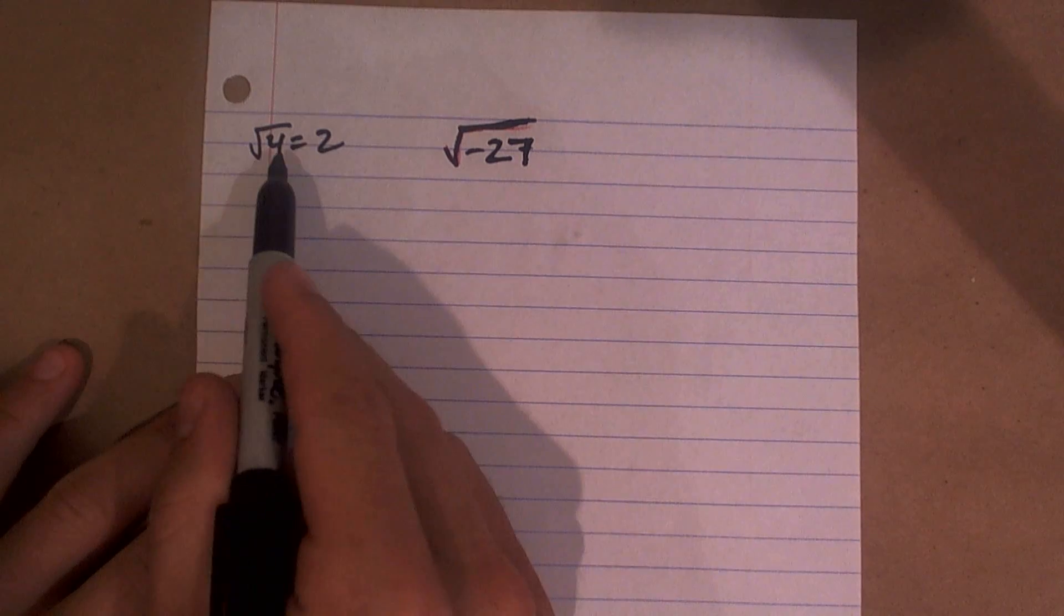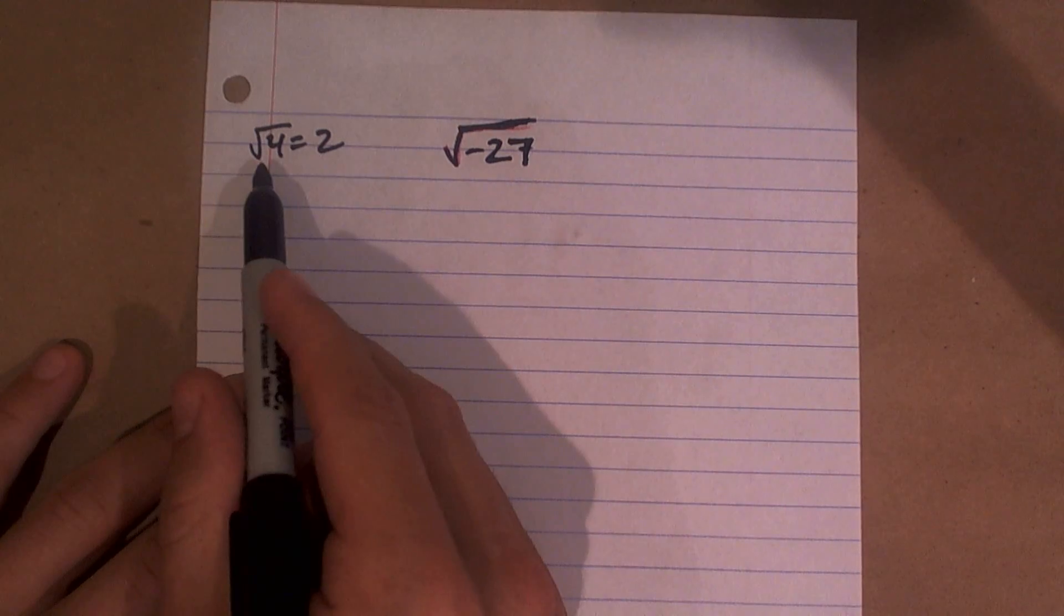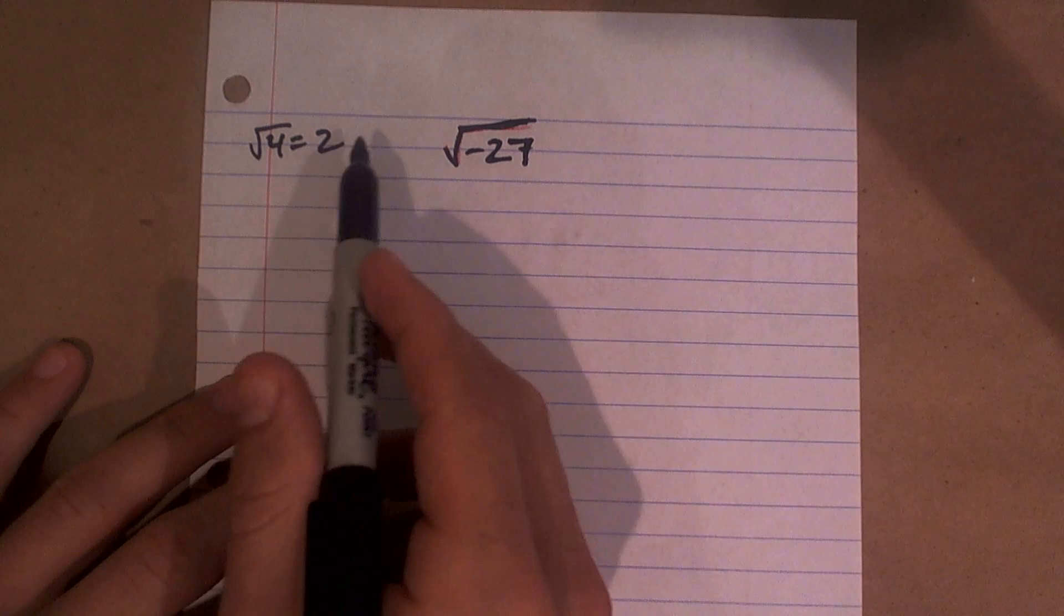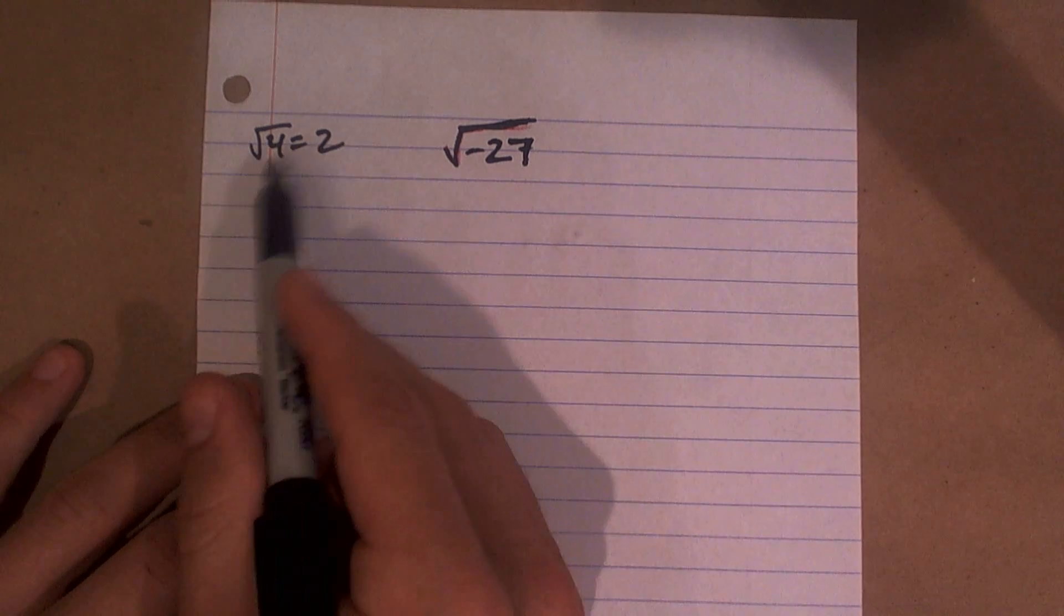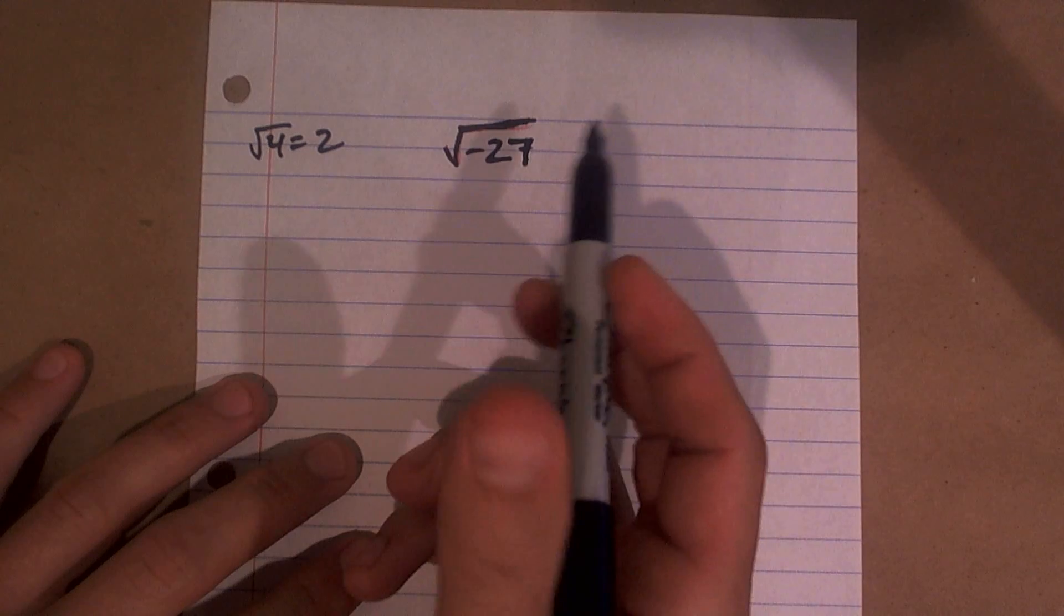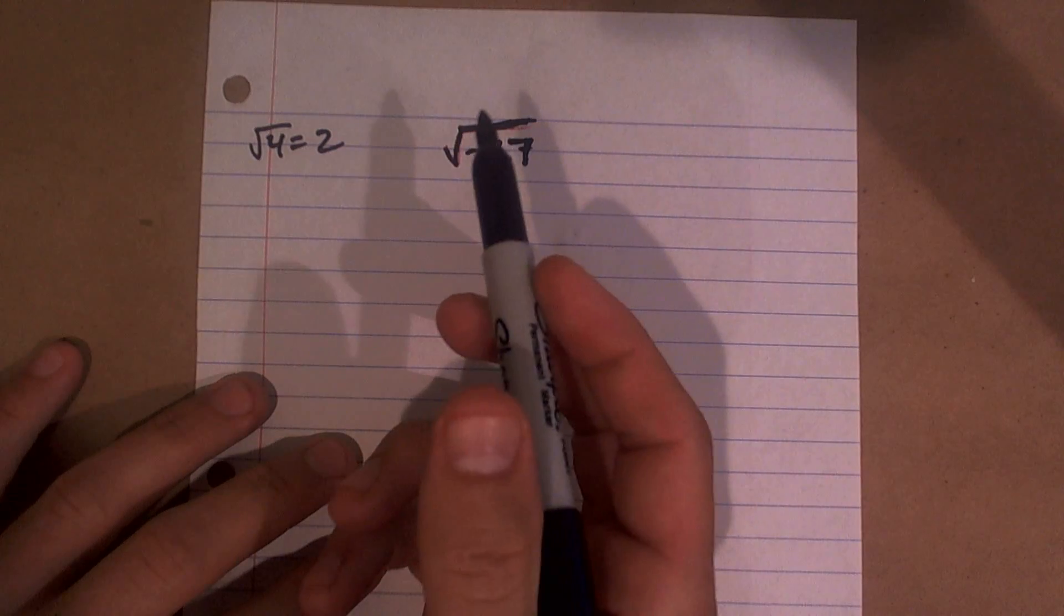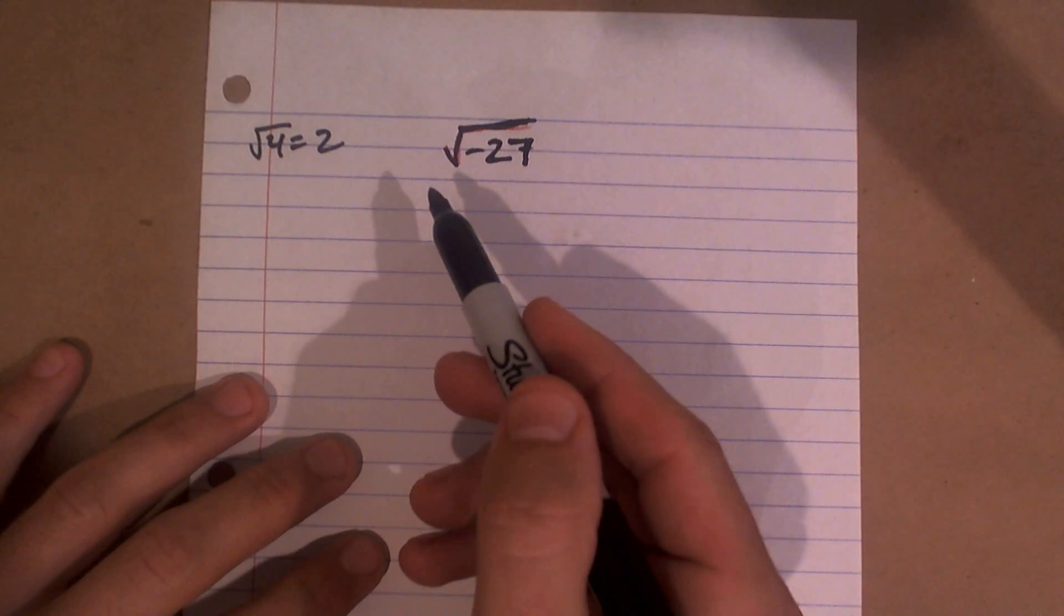So if I have the square root of a negative number, there's no number multiplied by itself that's going to equal something negative, because a negative times a negative and a positive times a positive are always going to equal a positive number.